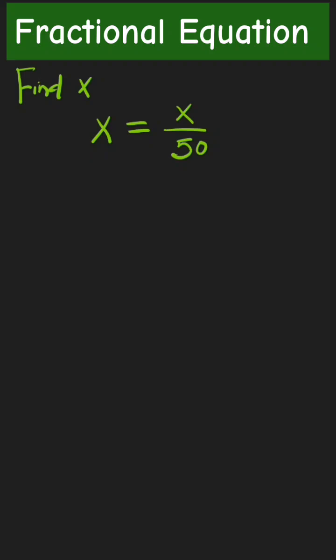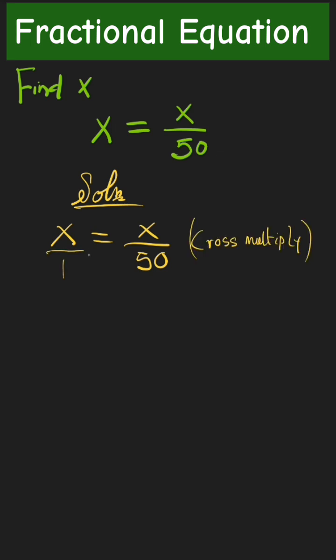Hello everyone, welcome to Maths with Mr J. Today I'm going to show you how to find x. x equals x all over 50. We say solution: x equals x all over 50. We say cross multiply. When we cross multiply, we have 50 times x.